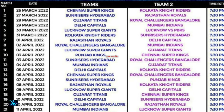April 8th: Rajasthan Royals vs Kolkata Knight Riders. April 9th: Lucknow Super Giants vs Delhi Capitals. April 9th another match: Gujarat Titans vs Chennai Super Kings. April 10th: Delhi Capitals vs Sunrisers Hyderabad. April 10th another match: Royal Challengers Bengaluru vs Rajasthan Royals.